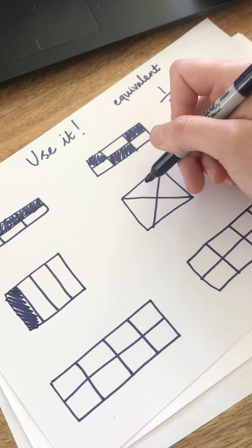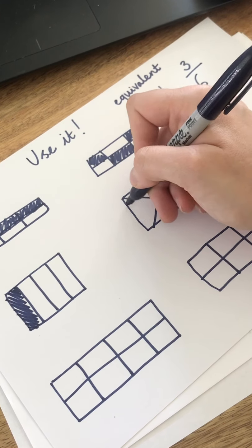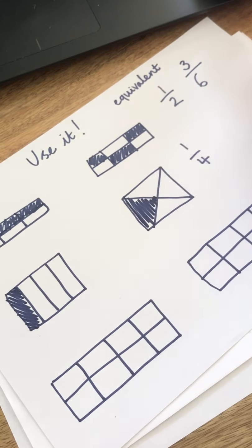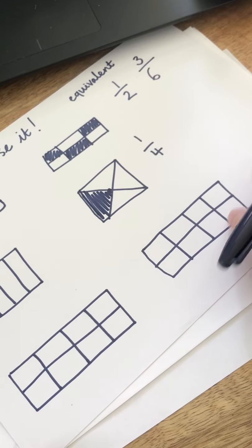This one's been split into four, four equal parts. I only have to colour in one. But this is very tricky. This is much trickier. This hasn't been split into four parts.